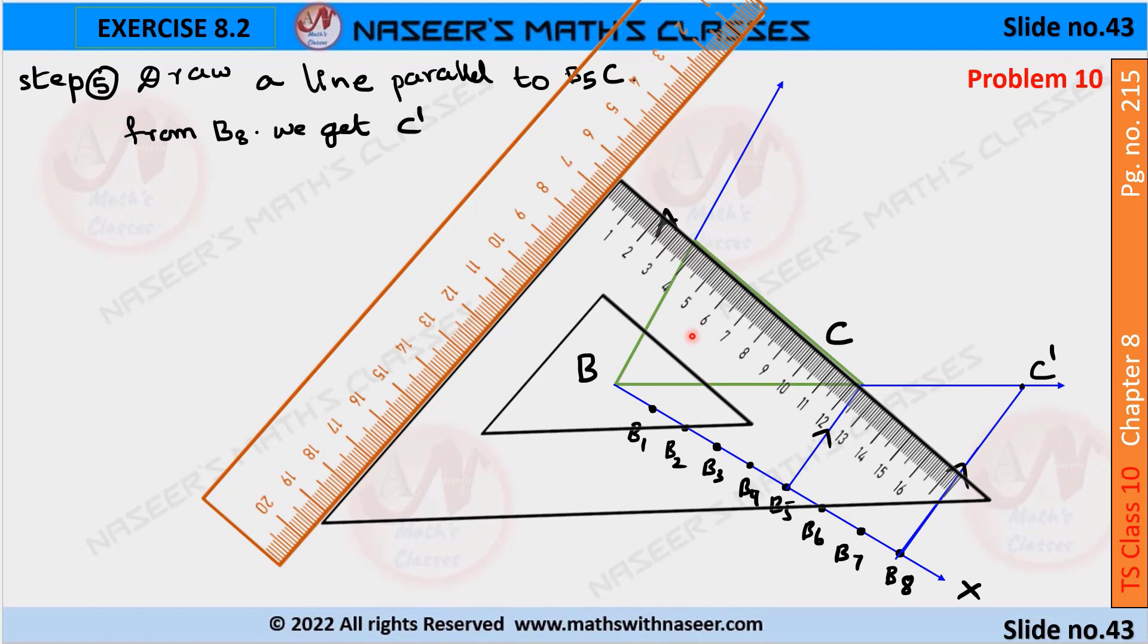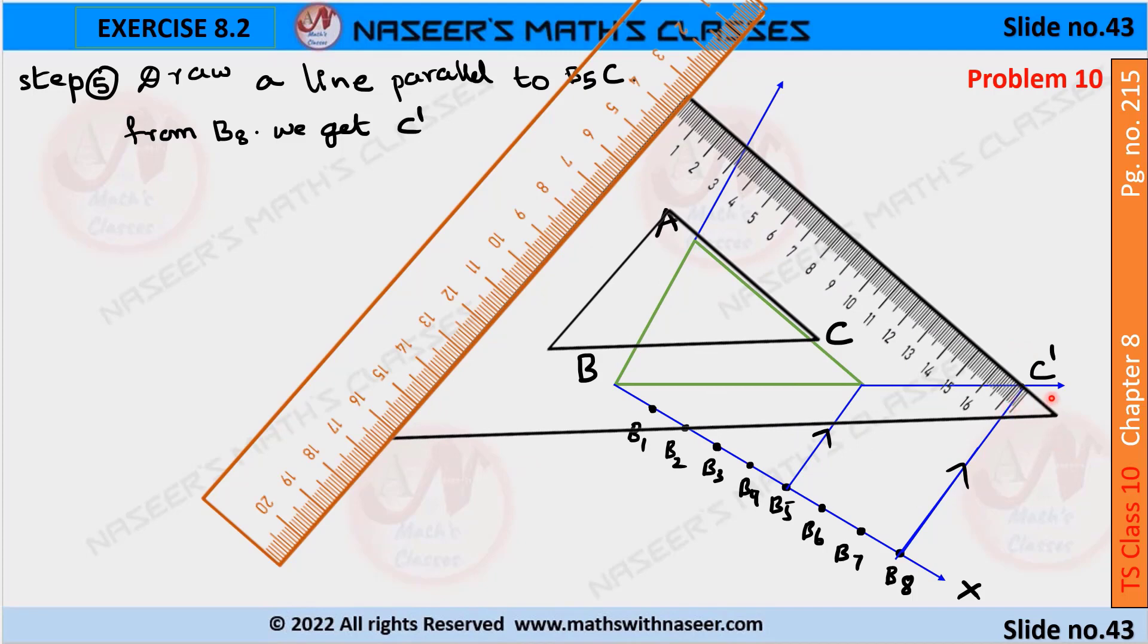Now we have to move the set square from point C to C' along the scale, and draw a line segment from C' which intersects AB at the point A'.